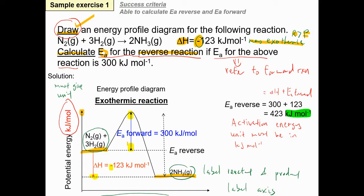For the axes, the y-axis is potential energy and must be labeled in kilojoules per mole, and the x-axis is reaction progress. Label both the reactants and products — we always start with reactants and end with products. Since enthalpy is negative (exothermic), the arrow for ΔH must point downward to show energy is released. Don't forget to include the value.